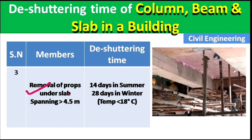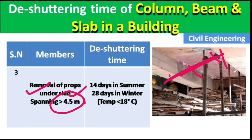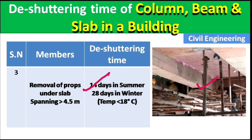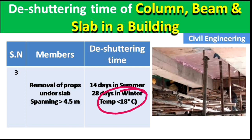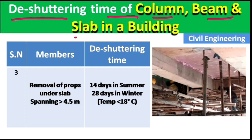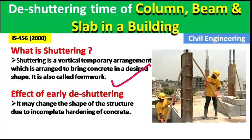For slabs with a span greater than 4.5 meters, the props should be removed after 14 days in summer and 28 days in winter, where winter means temperature below 18 degrees Celsius. These are the de-shuttering times for columns, beams, and slabs in a building. Please like this video and subscribe to my channel for new updates about civil engineering. Thank you.